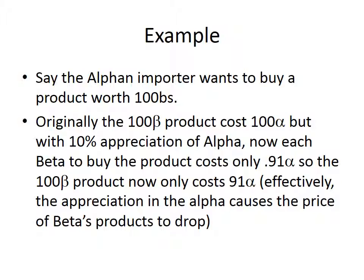Say the alpha importer wants to buy a product worth 100 betas. Originally the 100 beta product cost 100 alphas, but with the 10% appreciation of alpha, now each beta costs only 0.91 alphas. So the 100 beta product now only costs 91 alphas. The appreciation in the alpha causes the price of beta's products to drop — so the appreciation in the U.S. dollar makes imports cheaper.